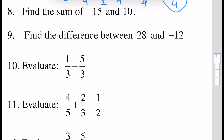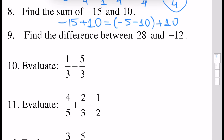Next, find the sum of minus 15 and 10. Easily done. Minus 15 plus 10 is minus 5, because minus 15 can be written as minus 5 minus 10. Here minus 10 and plus 10 will give us 0, and the answer will be minus 5.